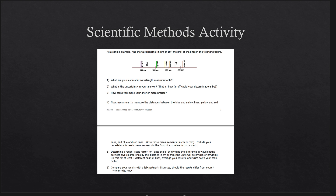The first part of the activity, as we look at it here — I'll bring it up on the screen — shows a spectrum. A spectrum is just a set of spectral lines, and those are these lines here that you see: purple, blue, green, yellow, orange, red, and infrared.